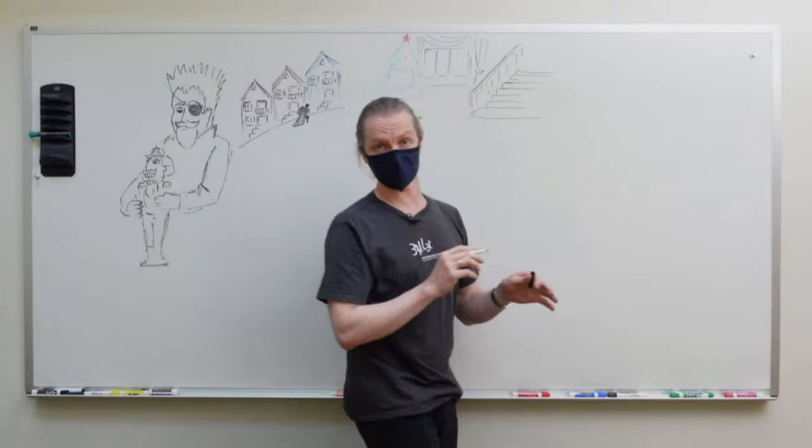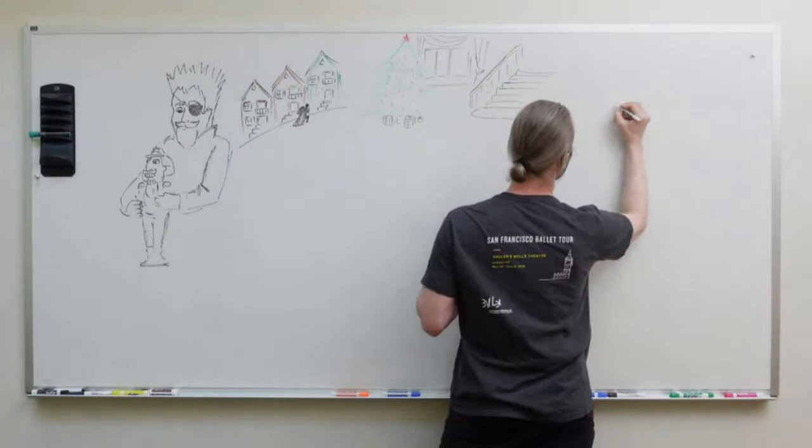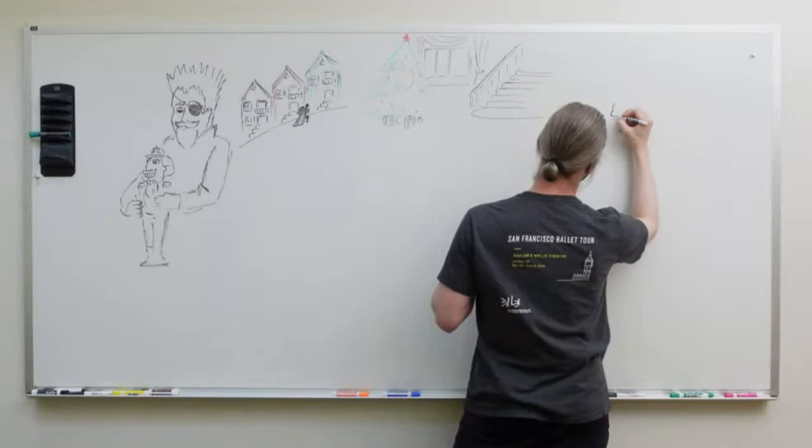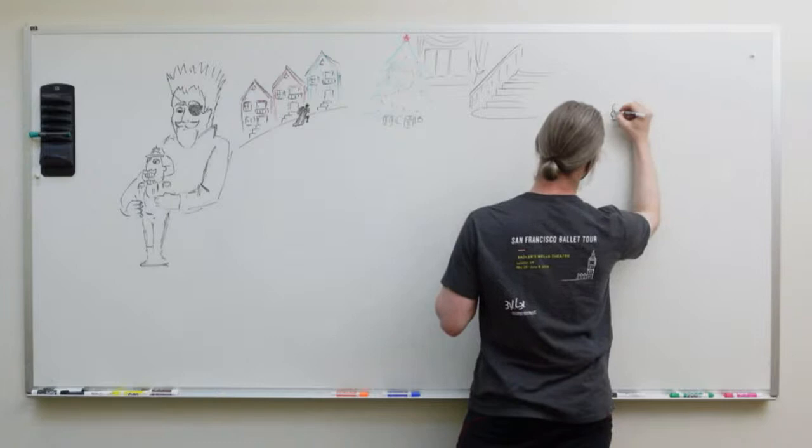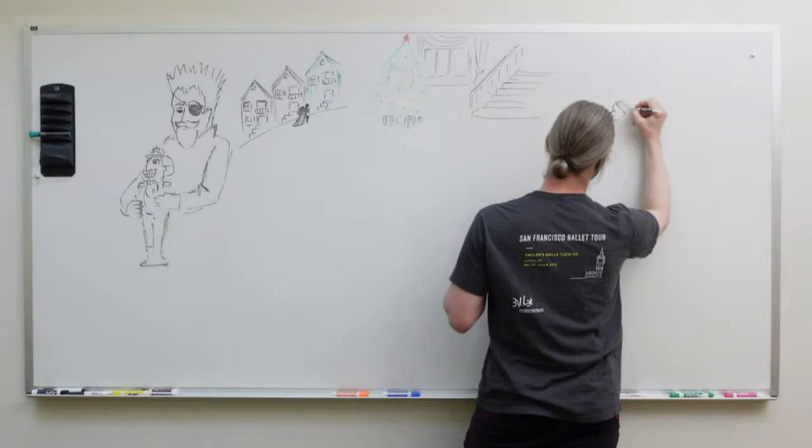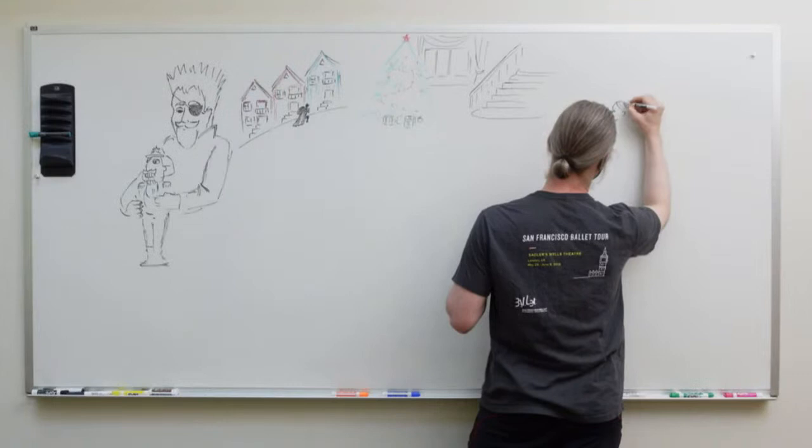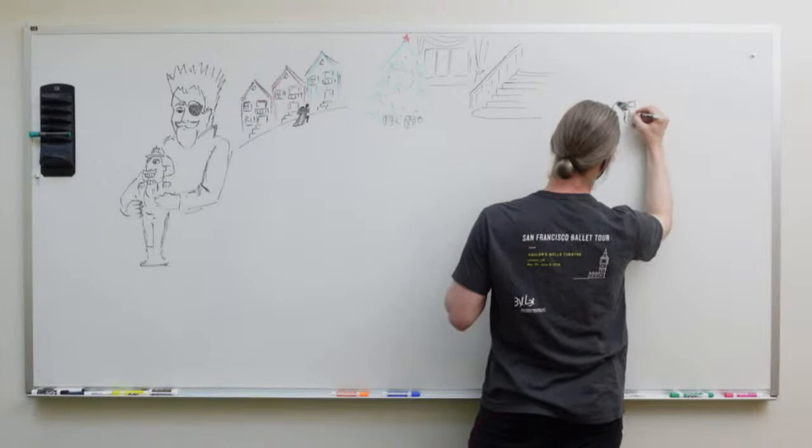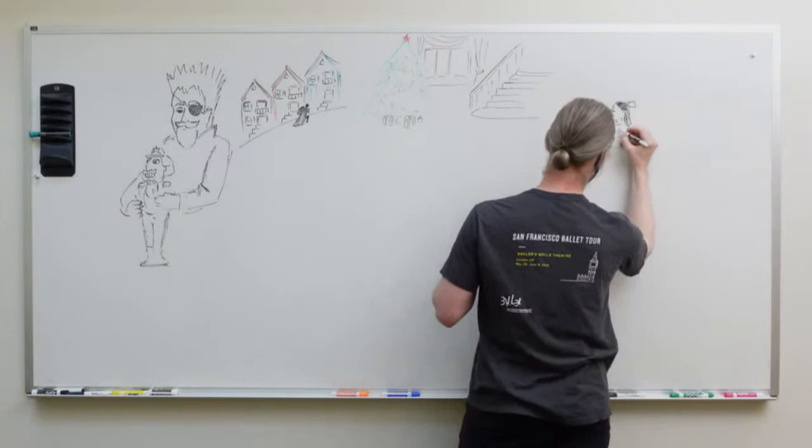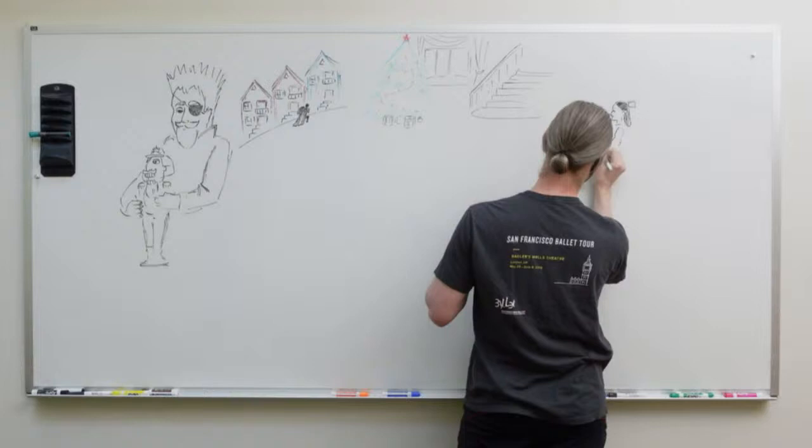Clara loved this nutcracker doll so much. She was begging, 'Please, may I play with him?' Uncle Drosselmeier is always so nice and said, 'Absolutely.' Let's draw Clara dancing with the nutcracker doll. Clara is smiling and looking down at this beautiful nutcracker doll she was so happy to play with. She has a little bow in her beautiful black hair. She's all dressed up and holding this nutcracker doll.